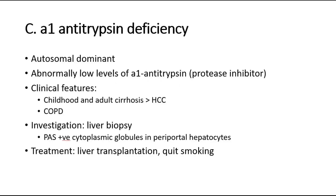Moving on to the third metabolic liver disease, alpha-1-antitrypsin deficiency. The inheritance pattern is autosomal dominant and it is characterized by abnormally low levels of alpha-1-antitrypsin. Clinically, the patient will present with liver cirrhosis, or if there is chronic progression it can cause hepatocellular carcinoma. They can also present with COPD, chronic obstructive pulmonary disease. To investigate, we can do liver biopsy to look for PAS-positive cytoplasmic globules in the periportal hepatocytes. The definitive treatment is liver transplantation, and we should also advise the patient to quit smoking if they are a smoker.